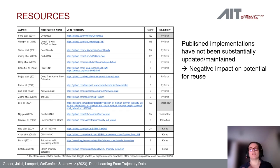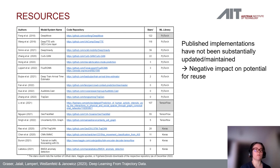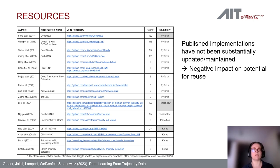Beyond use cases and architectures, we also looked into available implementations and open source code found across the reviewed papers. Commonly, most papers with source code are one-shots — people are usually not maintaining or updating their code — which makes it potentially harder for others to reuse the code and build on existing knowledge.